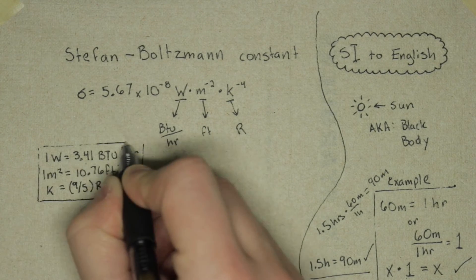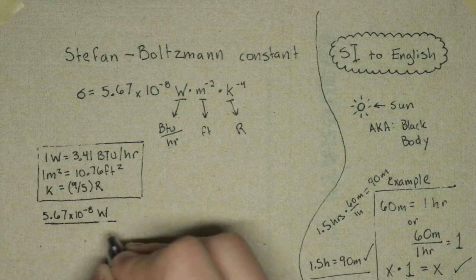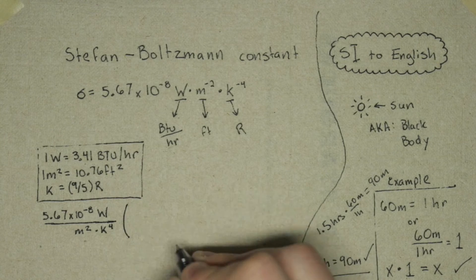We multiply our constant by our new units so that the numerators and the denominators cancel out, leaving the English units that we want to keep.